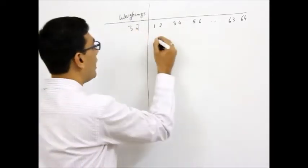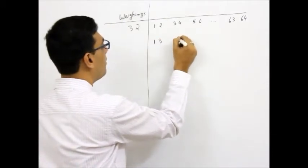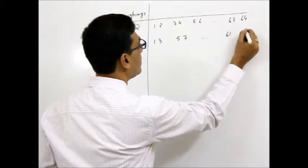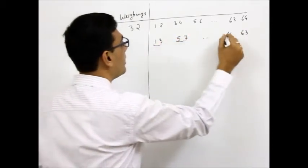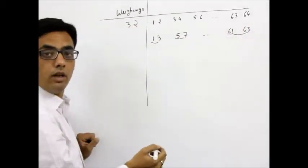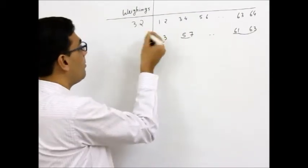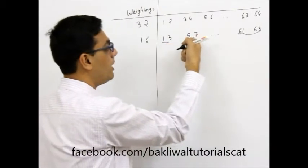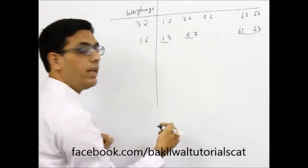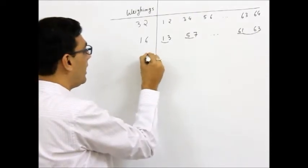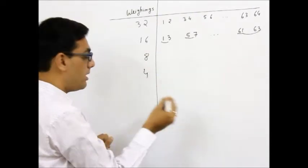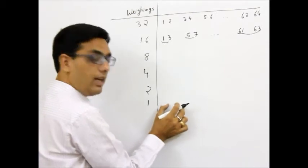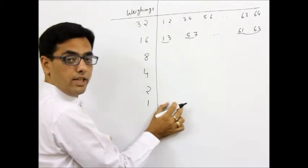In my next grouping, I will take 1 with 3, 5 with 7 and so on, 61 with 63. This is again the next grouping basically. How many weighings I get? Very simple, 16 weighings. And again I will come to know 1, 3, which one is heavier, in 5, 7 which one is heavier and so on. I will keep repeating the process. Next time I will take 8 weighings, next time 4 weighings, next time 2 weighings and finally my dear friends, I will take 1 weighing when exactly 2 marbles will remain in the contention in the last time.